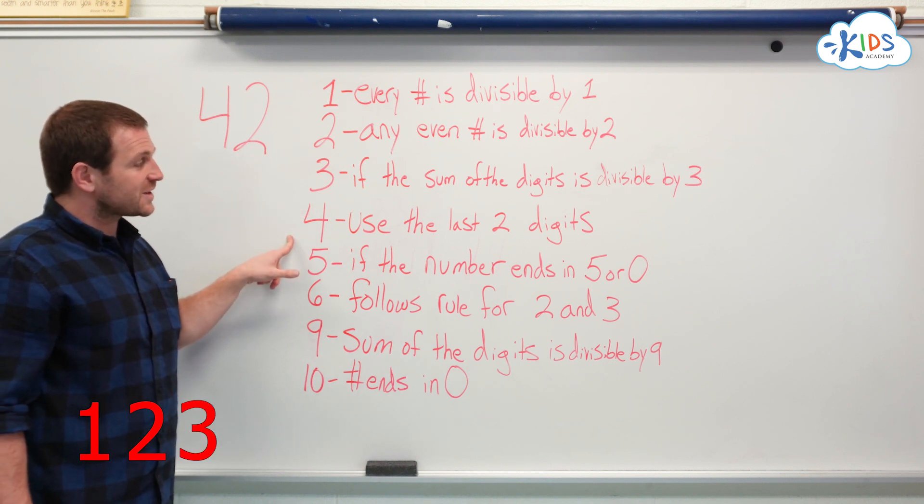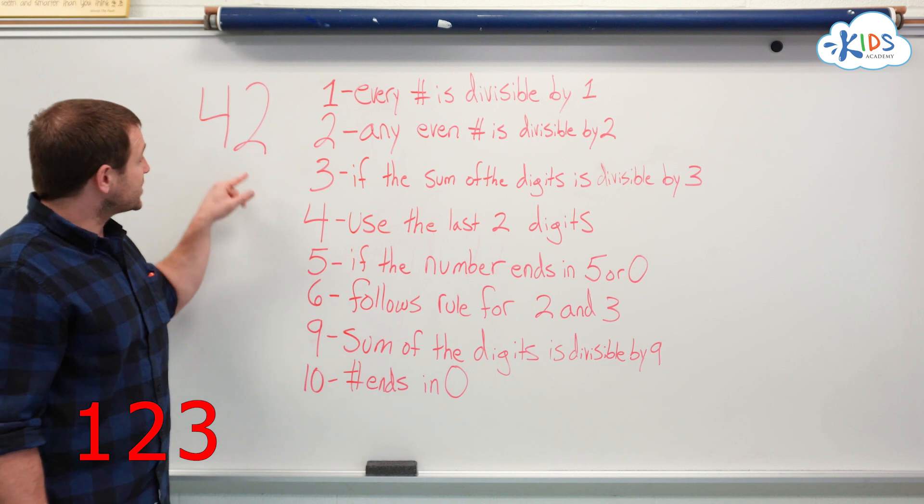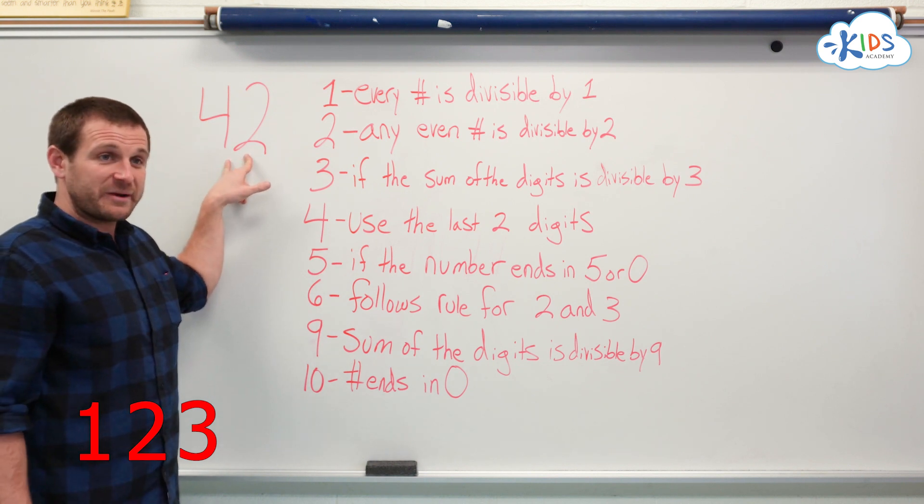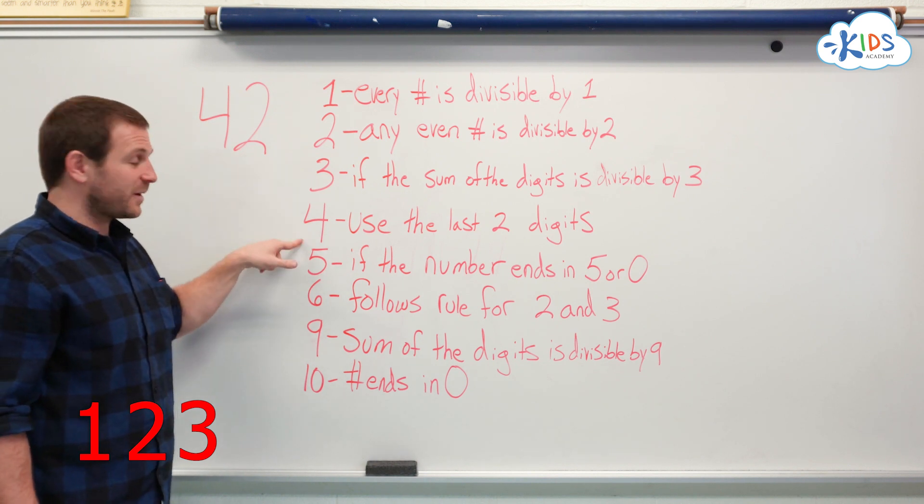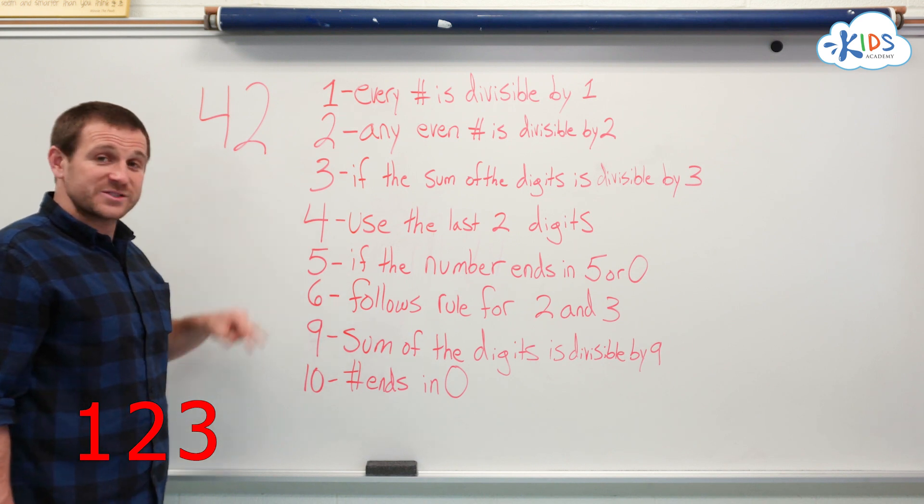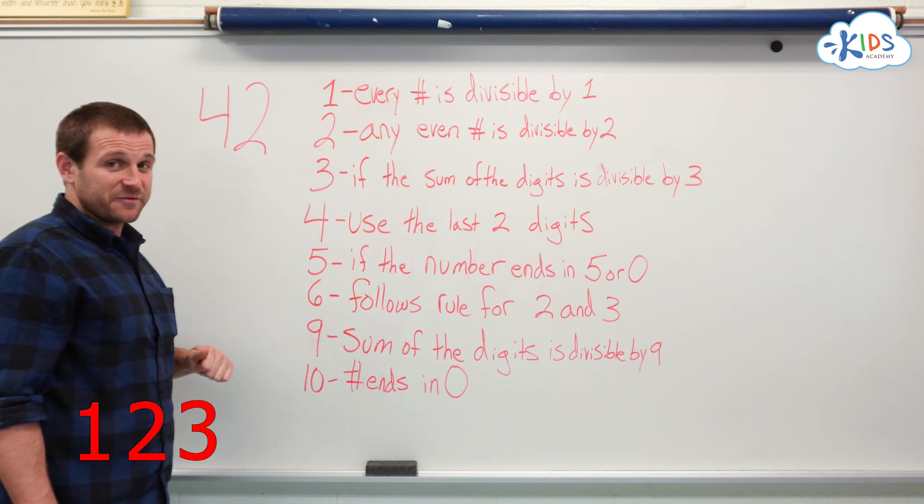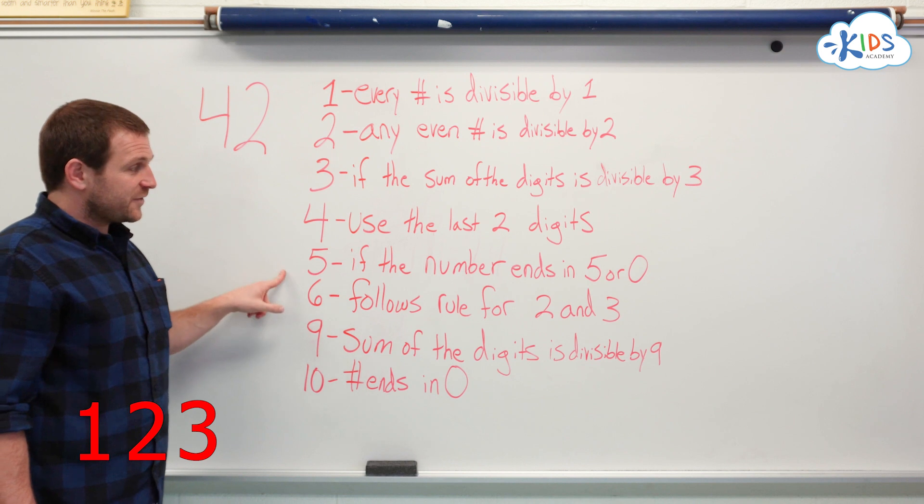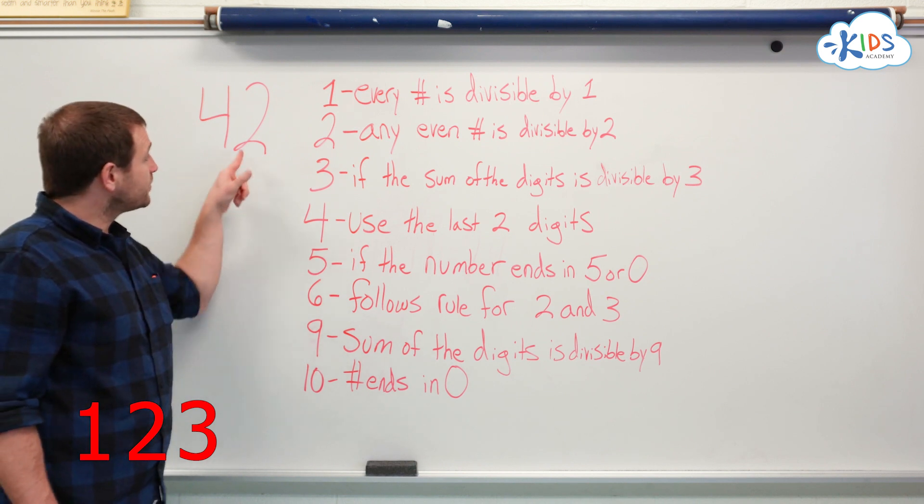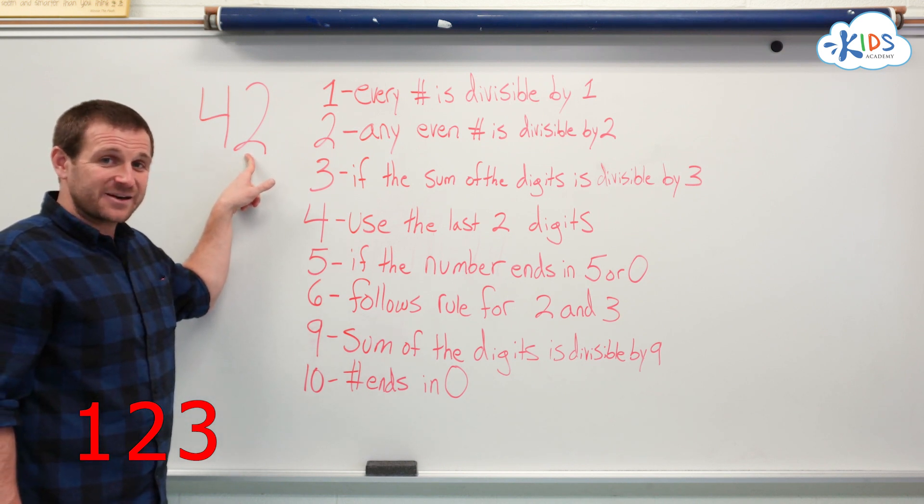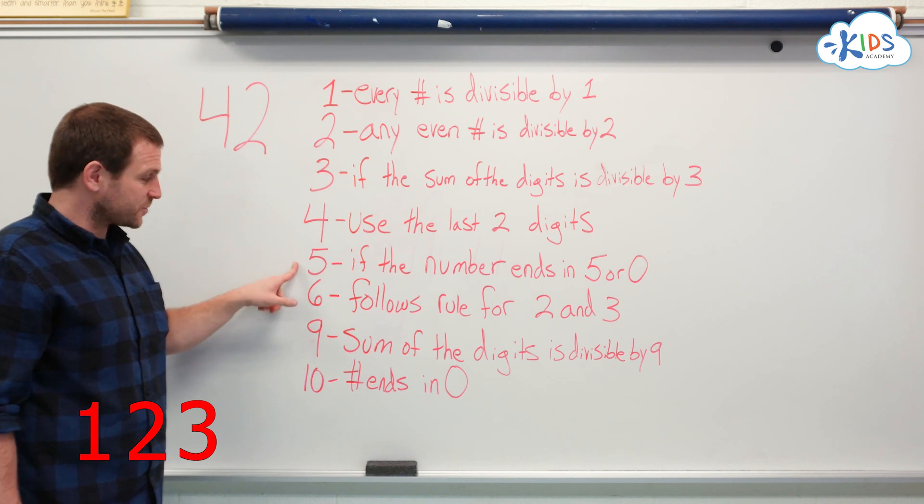For 4, we're going to use the last 2 digits. So if these 2 digits are divisible by 4 together, then it's divisible by 4 itself. 42 is not a number that is divisible by 4. If the number ends in a 5 or a 0, 42 does not end in a 5 or a 0, so it's also not divisible by 5.